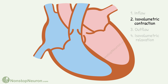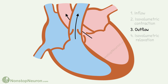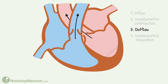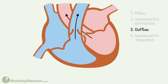Note that the atria start relaxing and collecting blood during Phase 2. Next is Phase 3, outflow. This phase is divided into two parts: initially there is a rapid ejection of blood, called rapid ejection, and then the ejection gets slower, called slow ejection.